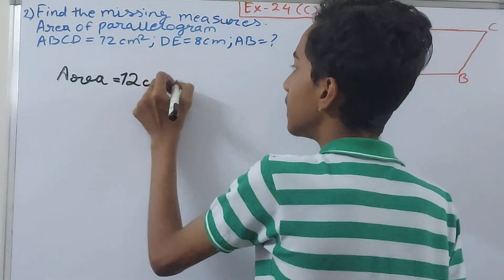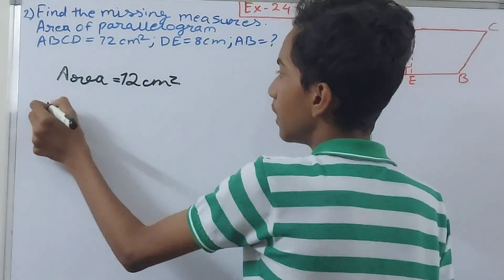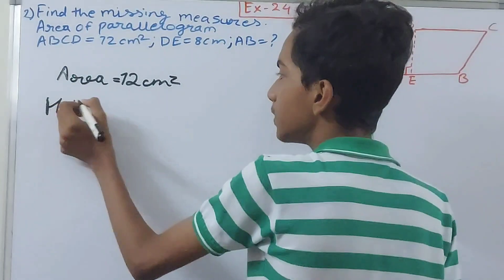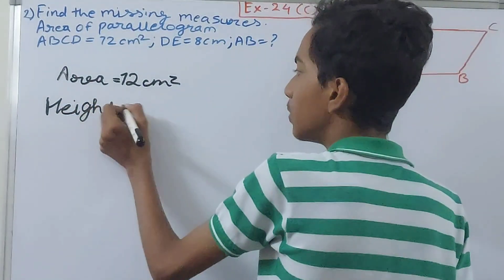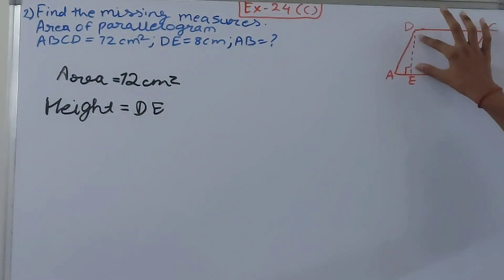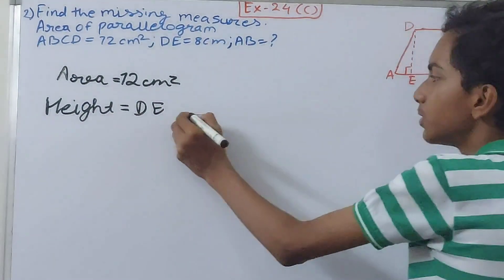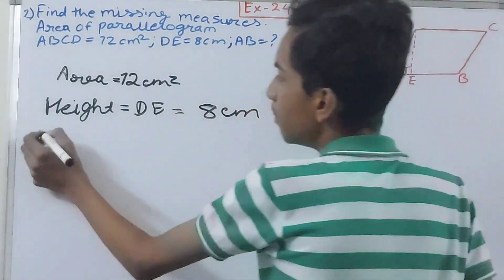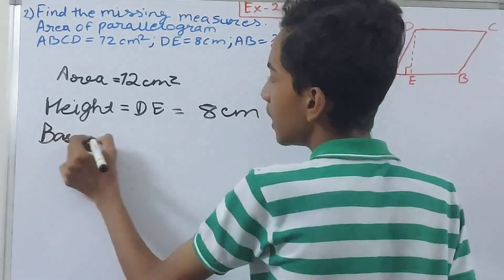Then is the height. What is the height? Height equals to DE. We can see here this is the height in a parallelogram, so DE equals to 8 centimeters. And base, that is AB.